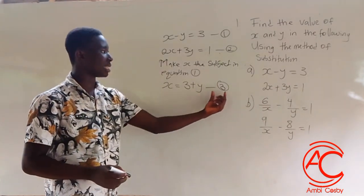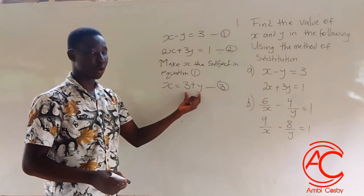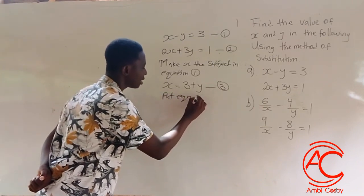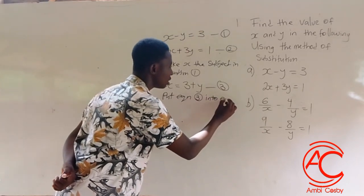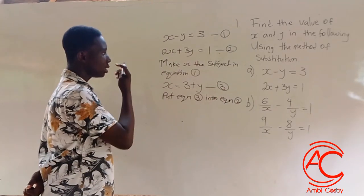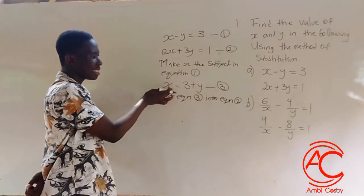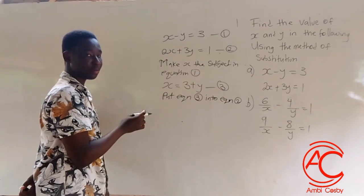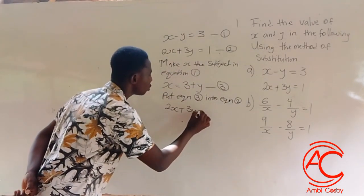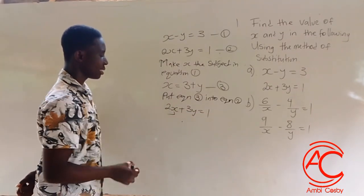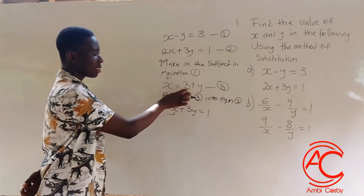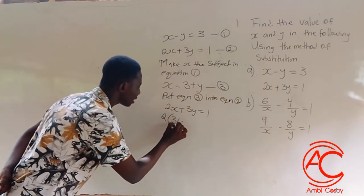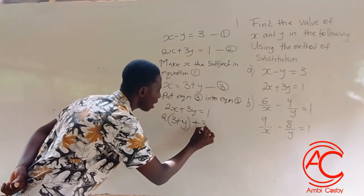Now we are going to fix equation 3 into equation 2 so that we get the value for y. Equation 2 is 2x plus 3y is equal to 1, and equation 3 tells us x is equal to 3 plus y. So whenever we see x, we fix 3 plus y in its place. We now have 2 multiplying (3 plus y) plus 3y is equal to 1.